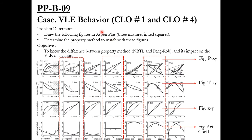This activity covers CLO number 1 and CLO number 4. CLO number 1 is related to the basics or fundamentals of this course, while CLO number 4 is related to analysis. In the problem description, we have to draw figures in Aspen Plus for three mixtures — we will draw PXY, TXY, XY, and activity coefficient diagrams for these three mixtures.